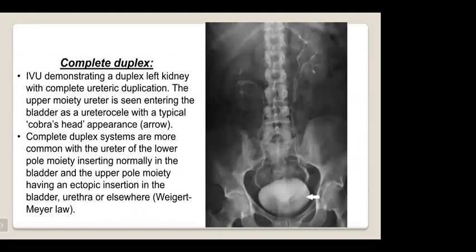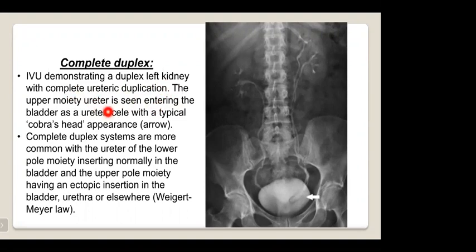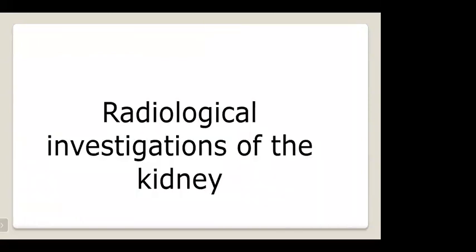In complete duplex, the ureters course completely separately until they enter the bladder. The IVU demonstrates duplex left kidney with complete ureteric duplication; the upper moiety ureter is seen entering the bladder as a ureterocele with typical cobra head appearance. The ureter of the lower pole moiety inserts normally in the bladder, while the upper pole moiety has an ectopic insertion in the bladder, urethra, or elsewhere.